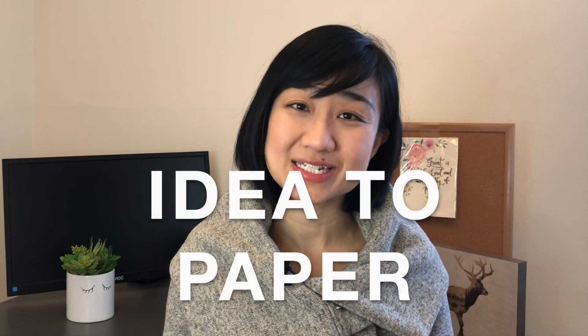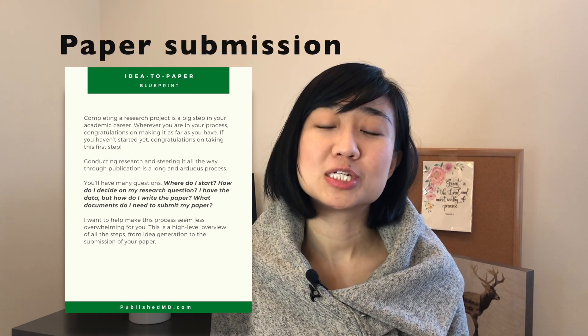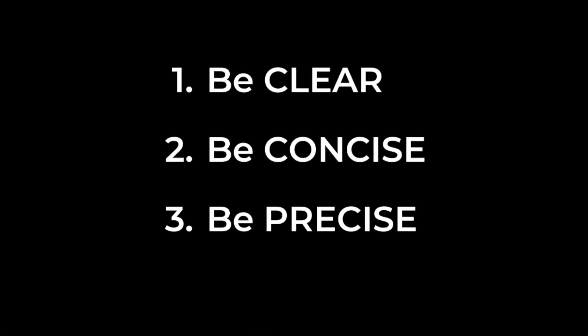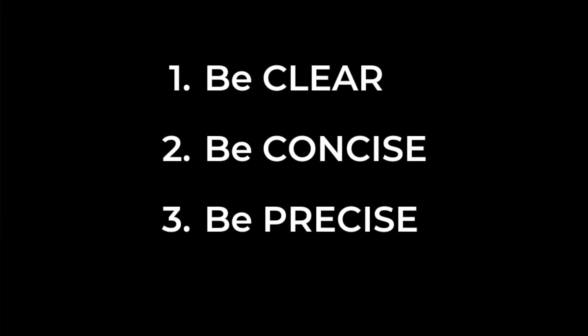I know conducting research from start to end is an overwhelming process. I made an idea-to-paper blueprint for you. The blueprint takes you through the seven-step process from idea generation to paper submission — be sure to get a copy by clicking on the link below. The three key elements of good academic writing include: be clear, be concise, and be precise. I want you to start implementing them today. But if you find yourself procrastinating, watch the video on how to overcome procrastination. I will see you in the next video.